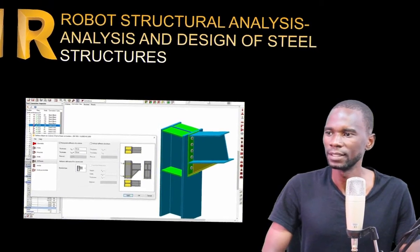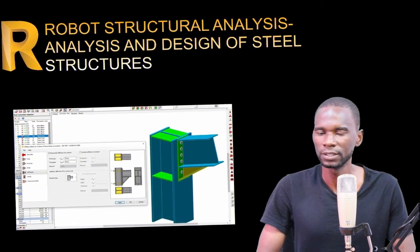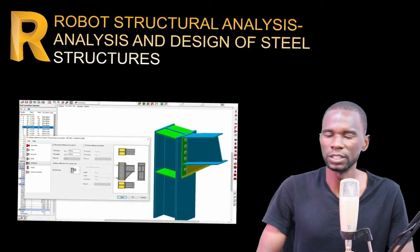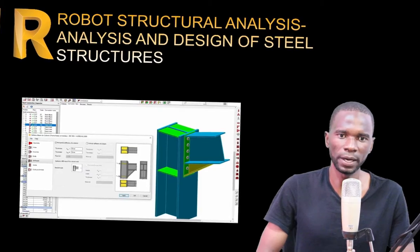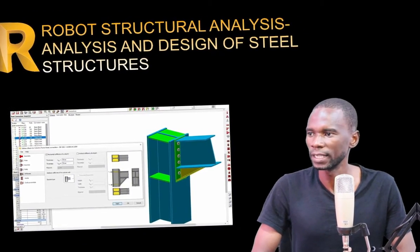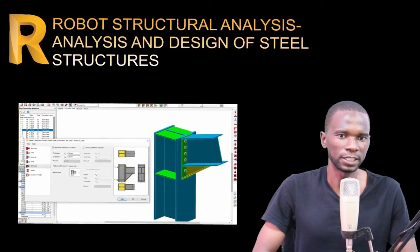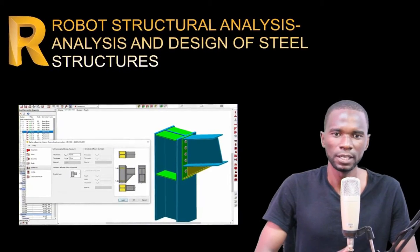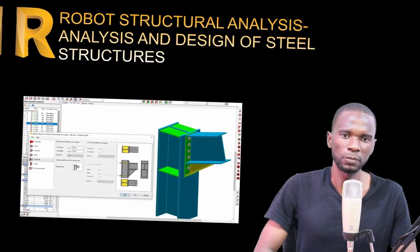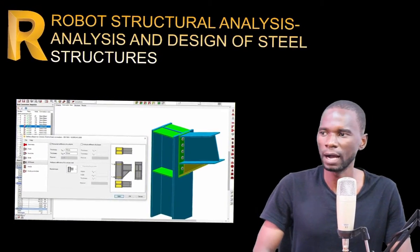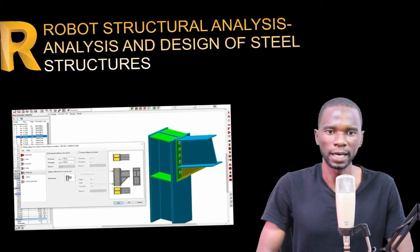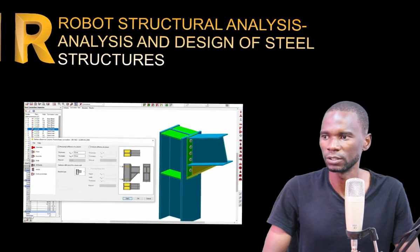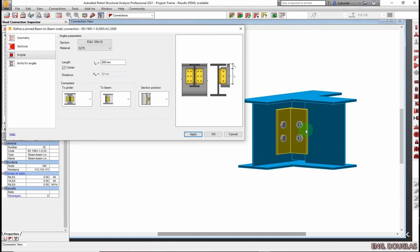The last chapter we are going to look at is the design of steel connections in Robot Structural Analysis. We are going to look at a number of connections, including base plate connections, beam-to-beam connections, the apex haunch, and many others as we will see in this course.